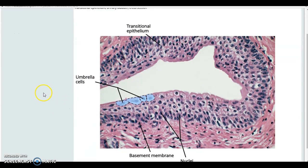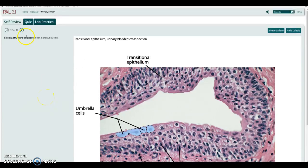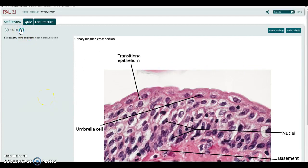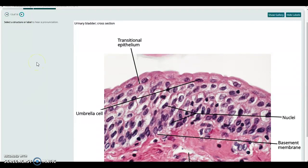Umbrella cells, again, on the surface. So that's pretty nice. Again, real up close of the transitional epithelial layer in the bladder.